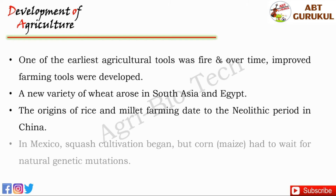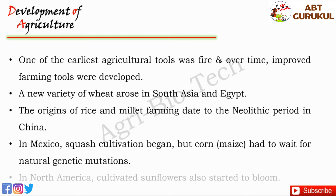In Mexico, squash cultivation began around 10,000 years ago. But corn had to wait for natural genetic mutations. Corn later reached North America, where cultivated sunflowers also started to bloom some 5,000 years ago.